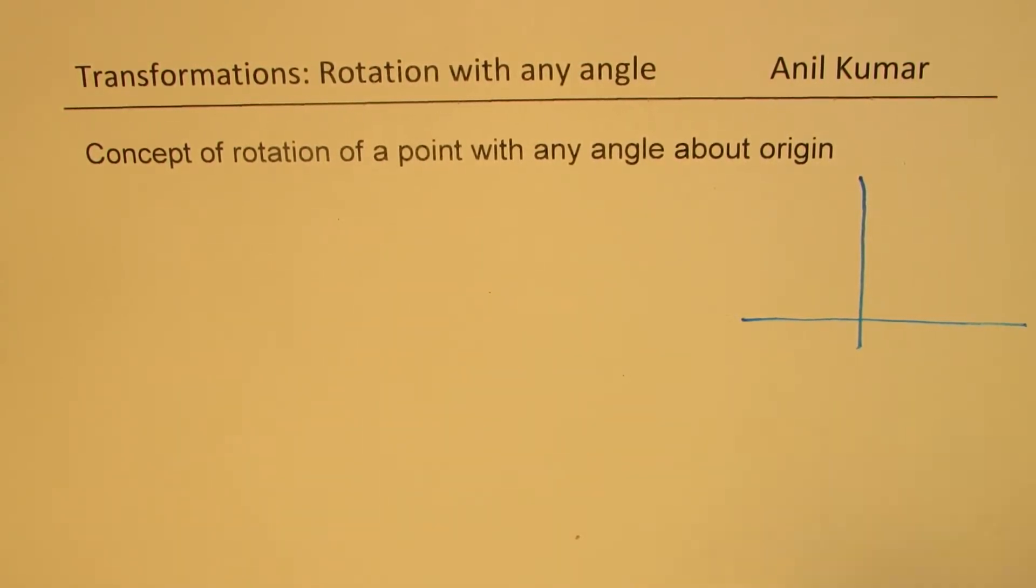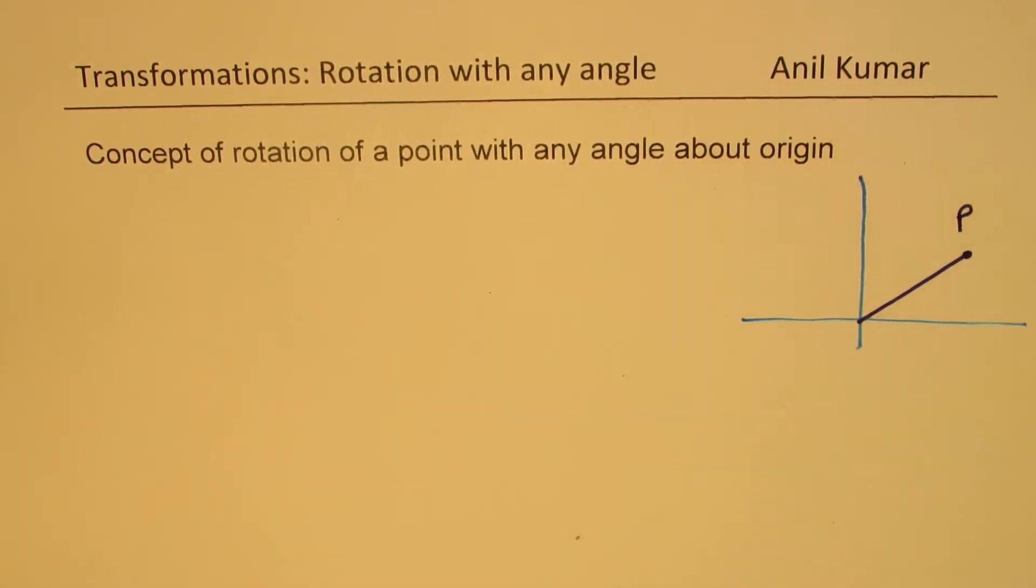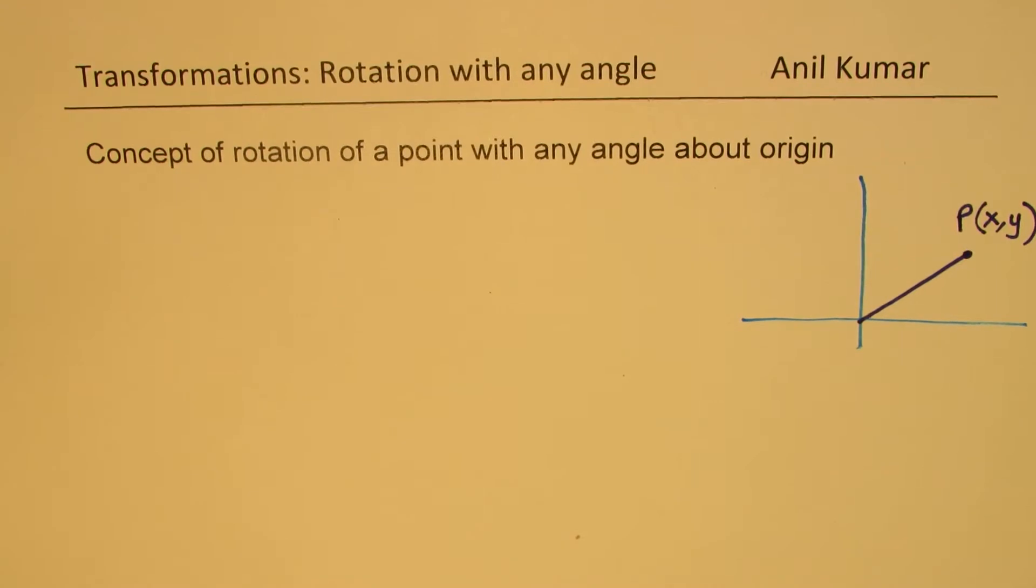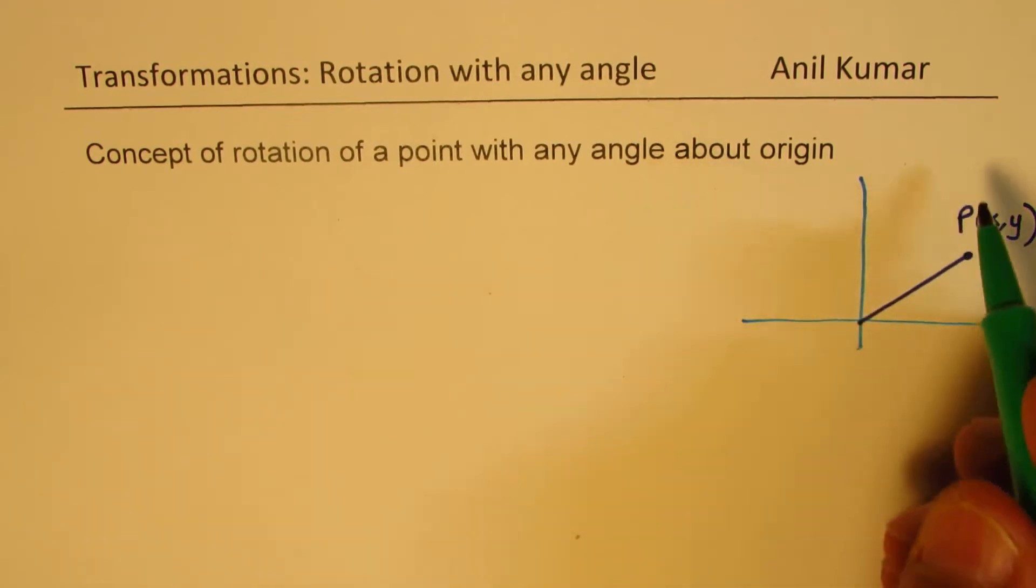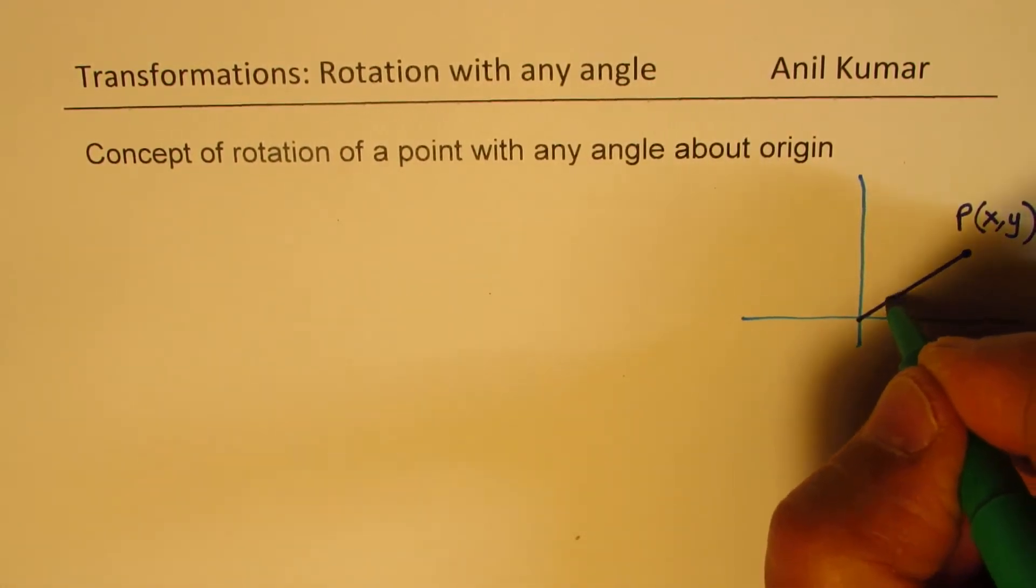Let us say we are given a point. Let's say this is the point P. Generally, we write the point in x, y coordinate as x, y. Now the question is, how do we rotate it about origin through some angle? So let's say we want to rotate this through an angle theta.